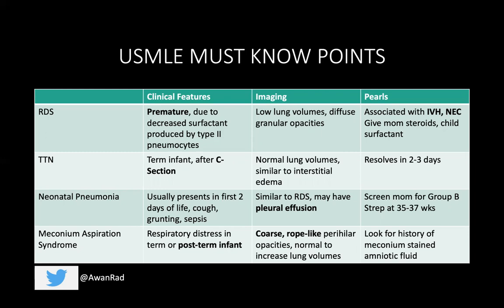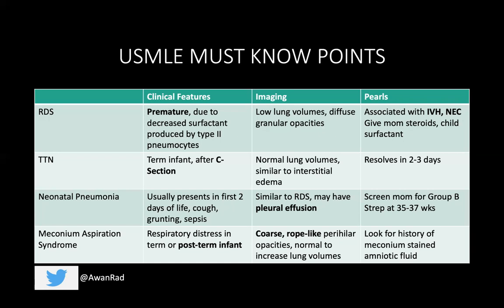Transient tachypnea of the newborn is a self-limiting condition. Always look for that C-section history — that's the key historical finding in the vignette leading you to TTN in term infants. Look for an interstitial edema pattern on chest x-ray that resolves in two to three days. For neonatal pneumonia, look for cough, grunting, sepsis, presenting in the first two days of life. Imaging is very similar to RDS but look for that pleural effusion seen in two-thirds of patients. Screen the mom at 35 to 37 weeks for Group B Strep. For meconium aspiration syndrome, look for a post-term infant history, coarse rope-like perihilar opacities with hyperinflation, and a history of meconium-stained amniotic fluid.